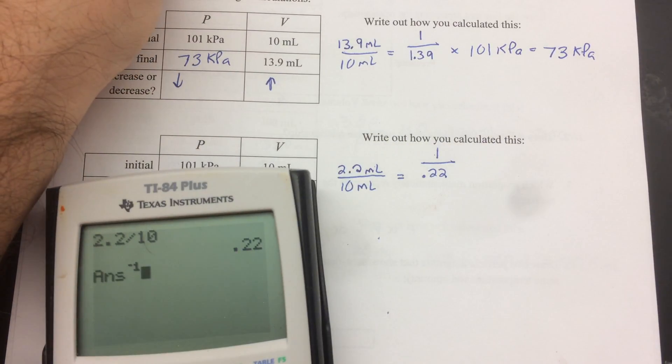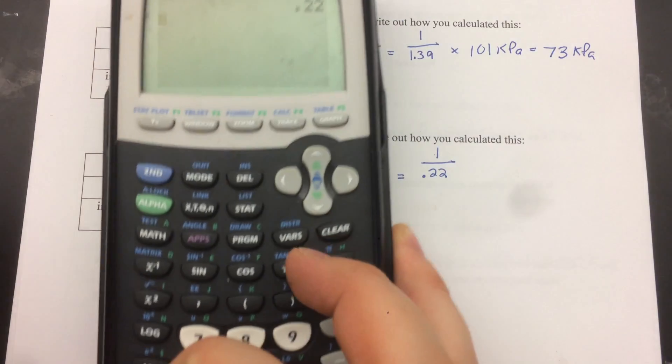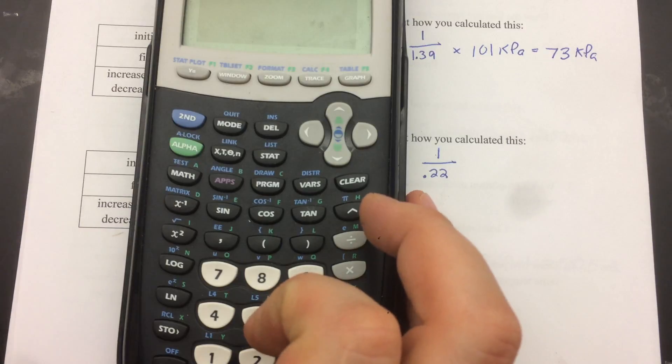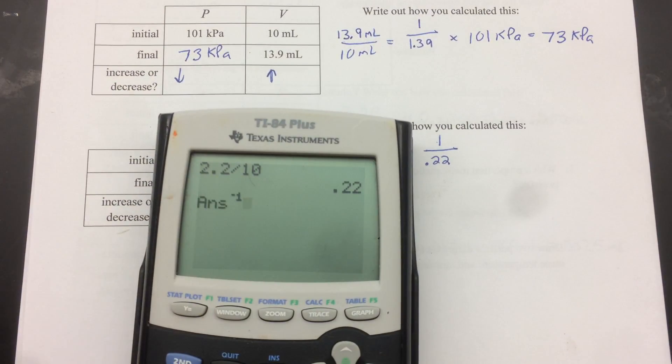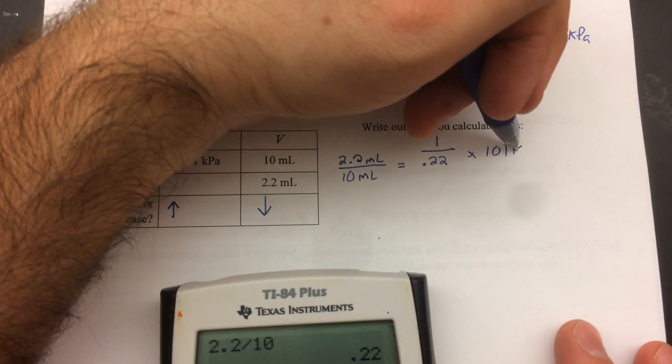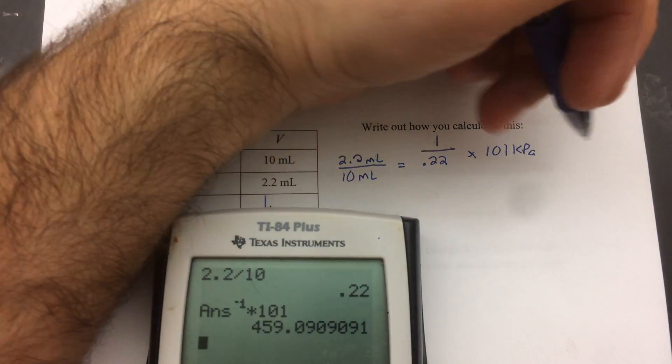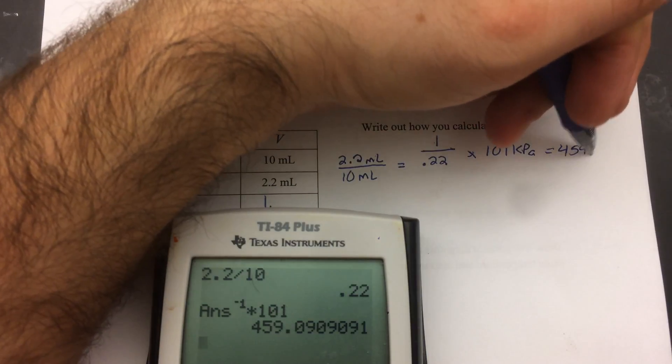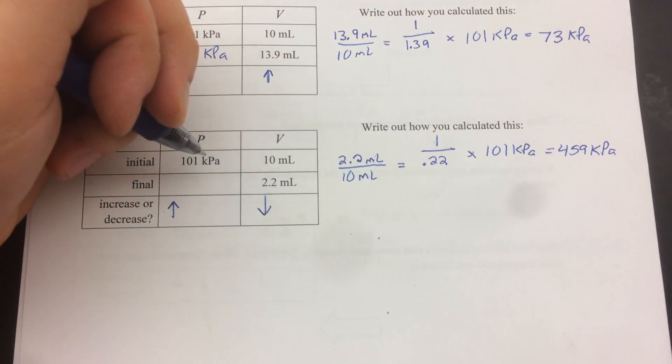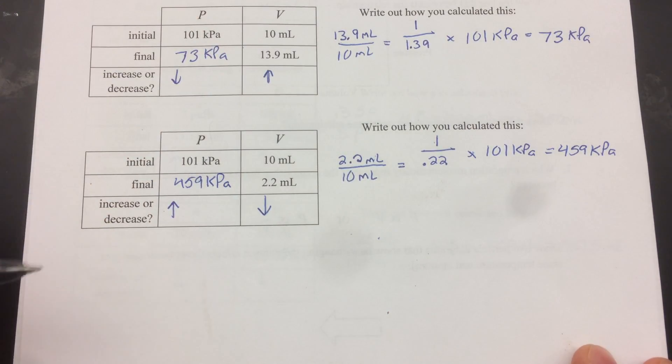So you can see what I did here. 2.2 divided by 10 is .22. Now I want to put this on the bottom. So on the calculator, there's an inverse button. And it looks like that. x to the minus 1. So all I have to do is hit x to the minus 1 times 101 kPa. 459. Okay. So that goes there. 459. We said it was going to go up. It started at 101. It finished at 459. So that follows our prediction.